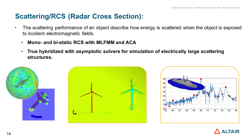One of the important applications of FEKO is scattering and RCS. The scattering performance of an object describes how energy is scattered when the object is exposed to incident electromagnetic fields. You can easily calculate monostatic and bistatic RCS in FEKO, and through true hybridization with asymptotic solvers you can handle electrically large scattering structures.